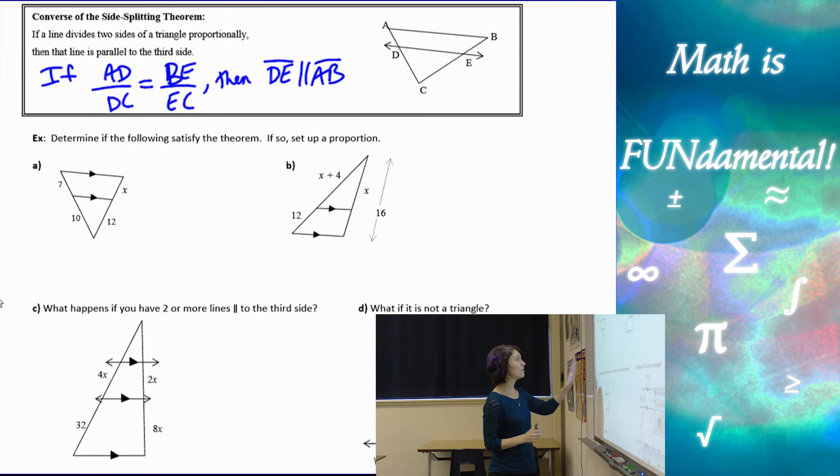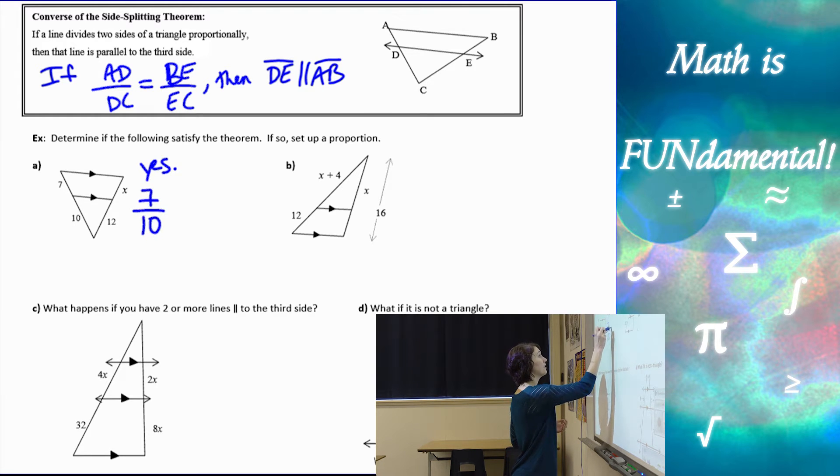So let's look at a couple examples. Determine if the following satisfy the theorem, and if so, set up a proportion. For part A, the only information we have to know is that the two sides are parallel. So yes, it does satisfy the theorem. To set up my proportion, I would say that 7 over 10 equals X over 12, and then we'd cross multiply and solve.